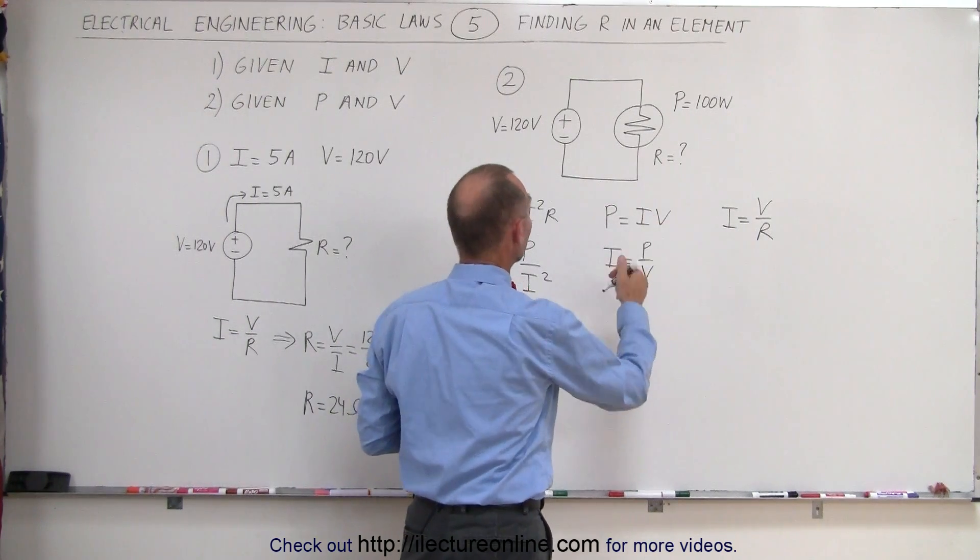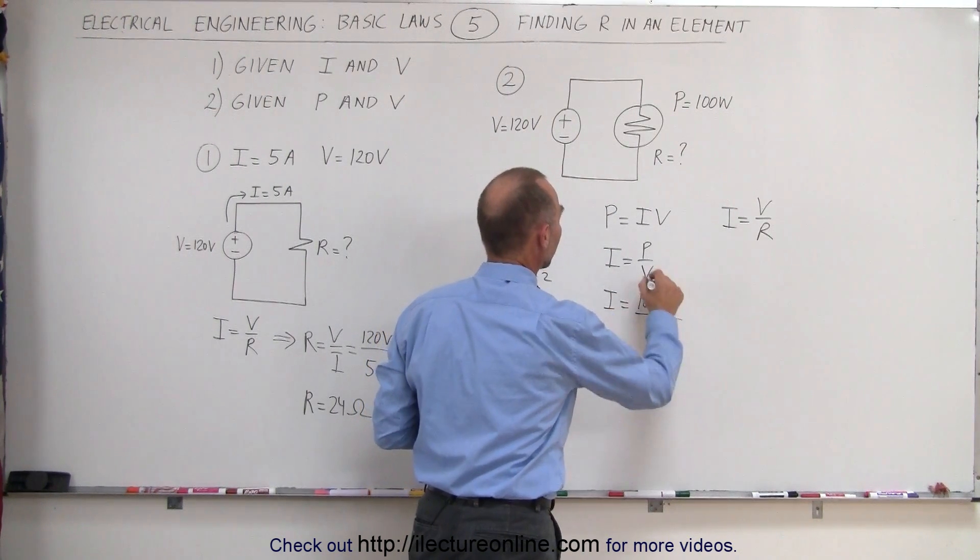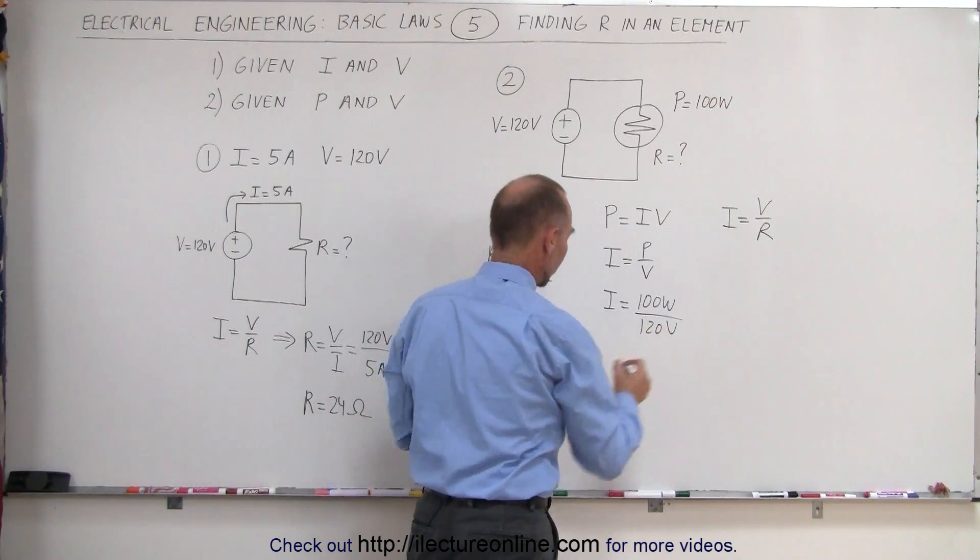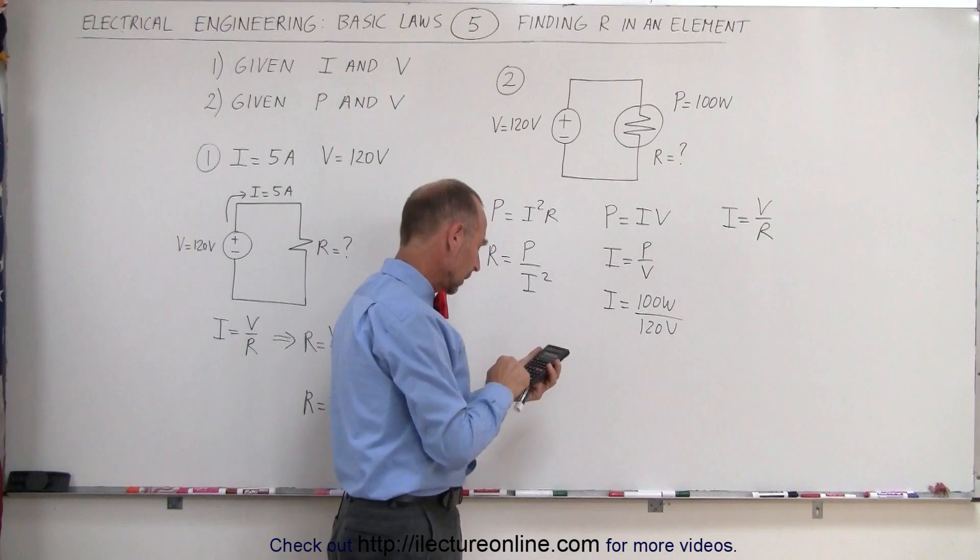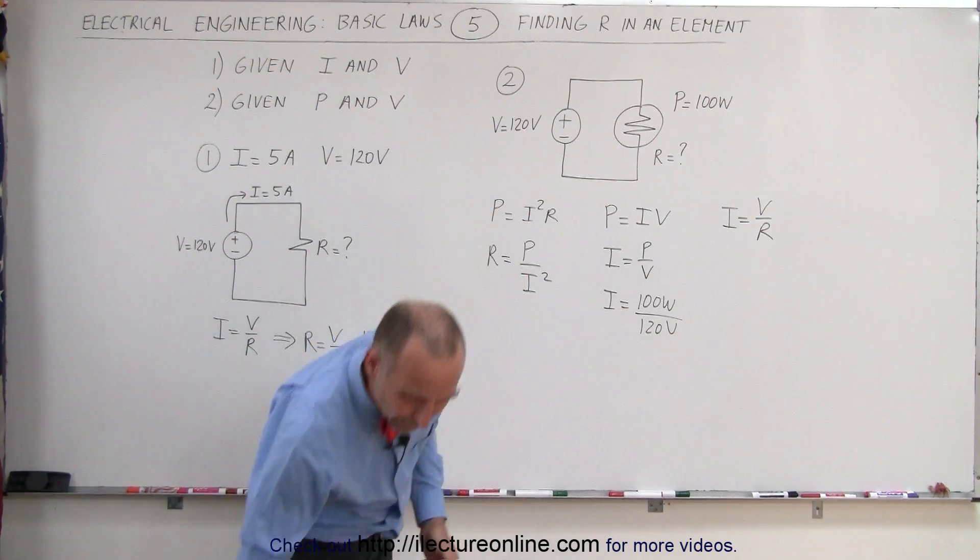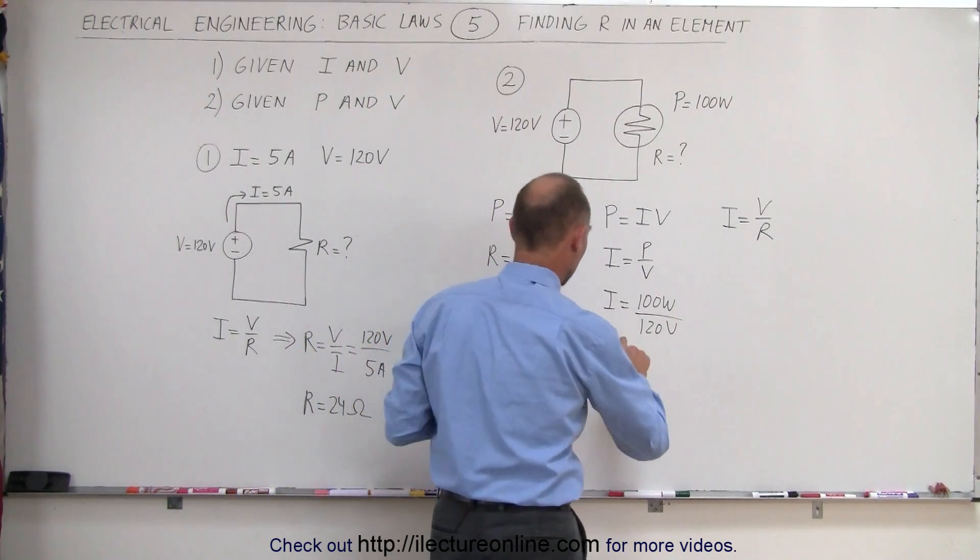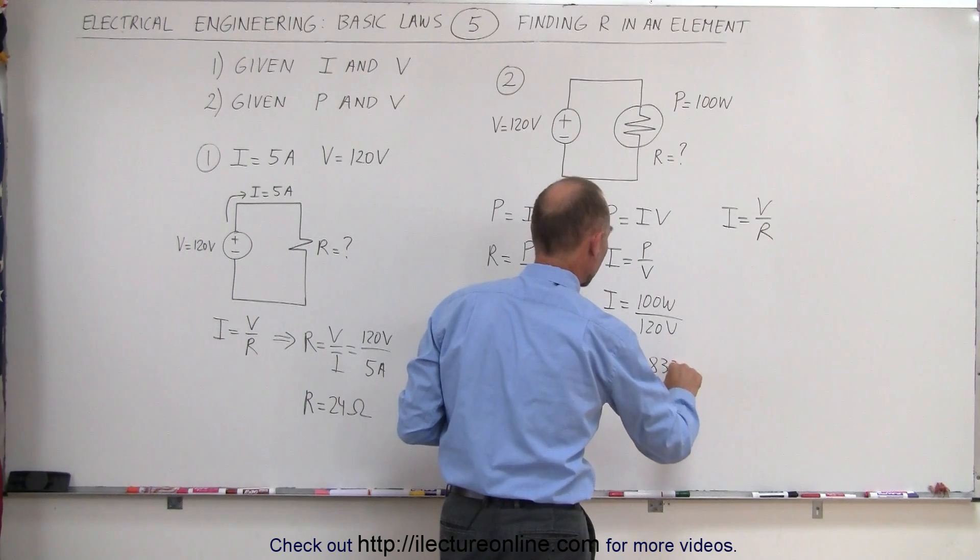Since both the power and the voltage are given, we can write I equals 100 watts divided by 120 volts. That will give us the current in the circuit. 100 divided by 120 gives us 0.833. I equals 0.833 amps.